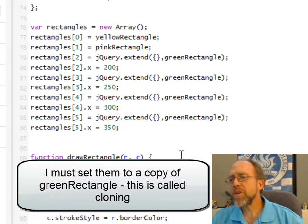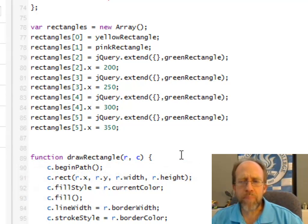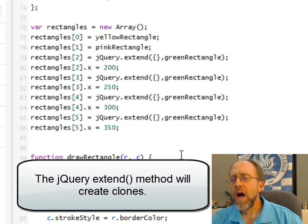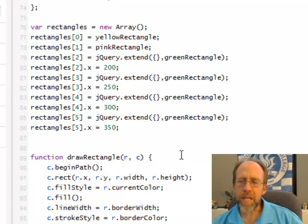So, what you have to do if you want to use the base properties of that rectangle, but make it a new object. Okay, make it a new object. You have to clone it. Some people say deep copy. Some people say clone. jQuery has a nice, easy function called extend,